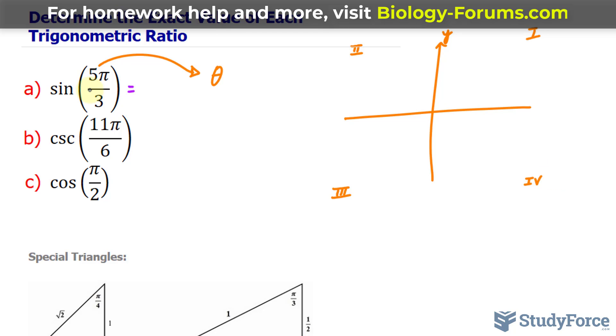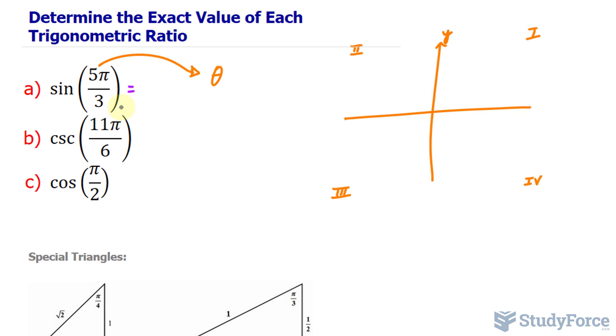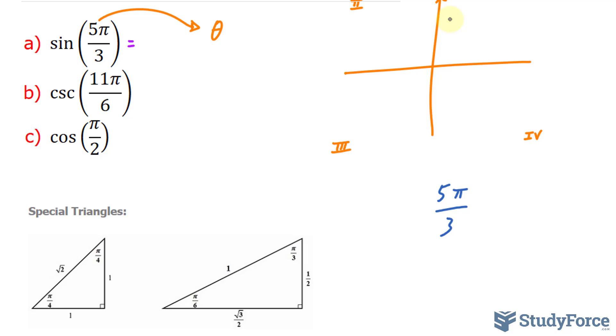If this were in degrees, you could easily tell that if it's between 0 and 90, it would be somewhere here. 90 to 180 over here, and you get the idea. But this one's in radians, so we need to analyze it a little further. One strategy that I like to use is to write it down as a mixed fraction. Notice that the numerator is bigger than the denominator, so I can do that.